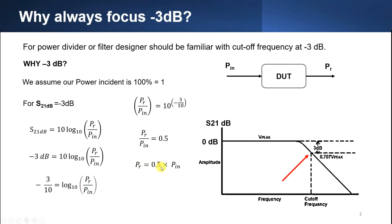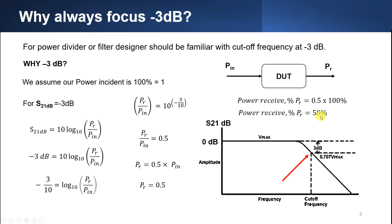Power received equals 0.5 times power input. Our power input is 1, so power received is 0.5. In percentage, that's 50%. So our power received is 50% when S21dB equals negative 3dB. This means the cutoff frequency indicates that 50% of power is received. For a low pass filter, signal passes near 100% at lower frequencies, but at the cutoff frequency it has decreased to 50%. This is why we focus on cutoff frequency at negative 3dB.